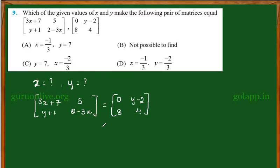Since it is an equal matrix, we can compare the corresponding elements of the matrix. So let me equate the corresponding elements. The first element is 3X plus 7 equal to 0. So this implies 3X is equal to minus 7, which again implies X is equal to minus 7 by 3.